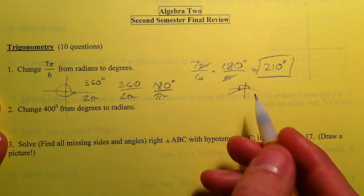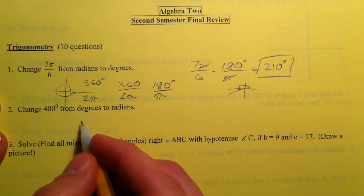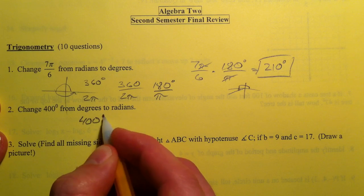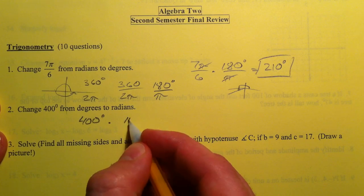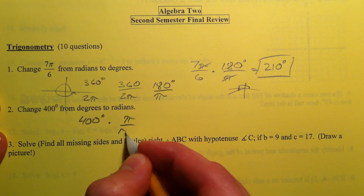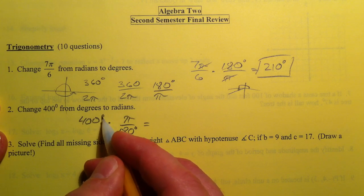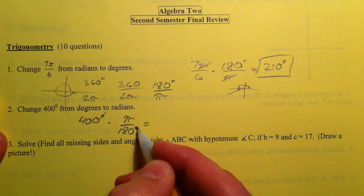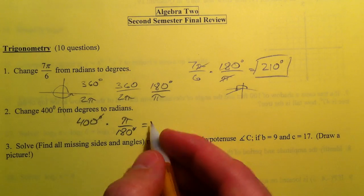Now, 400 degrees, we can't think in terms of our special triangles, and so we have to just use 400 degrees times, and we're going to flip over our ratio, π over 180. And so the way you do this is so that the degrees will cancel out, just like you do it in your science classes. And so 400 divided by 180 reduces to 20 over 9.